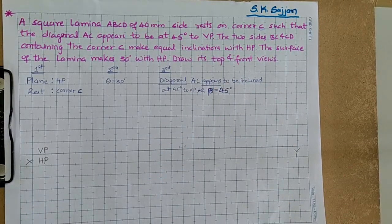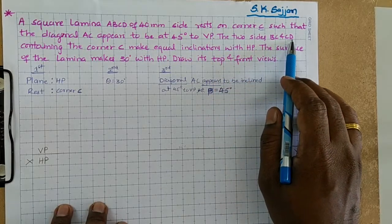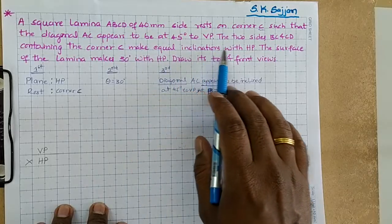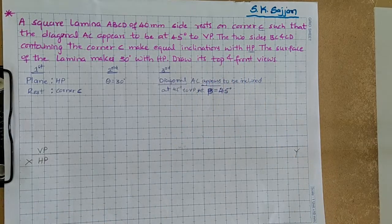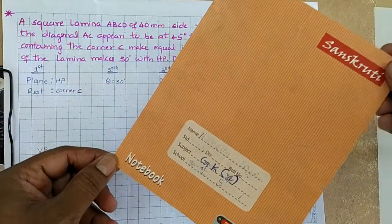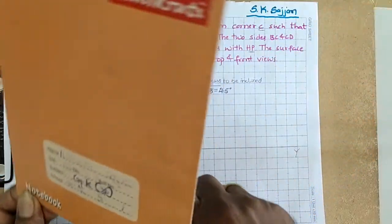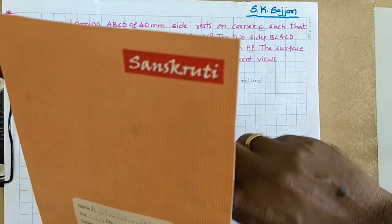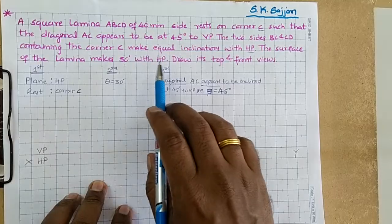The projection plane is not given directly in this problem. In these types of problems, some other hint is given to identify the projection plane. The hint given is: the two sides BC and CD containing the corner C make equal inclinations with HP. That means the given plane is HP — the lamina is resting on HP. When it is inclined to HP, these two edges make equal inclinations with HP. With the help of this sentence, we know the plane is HP.